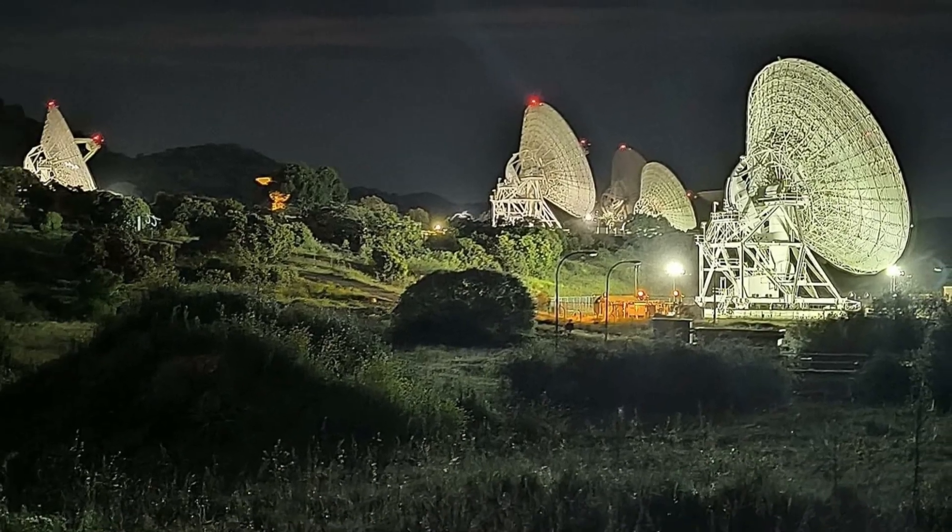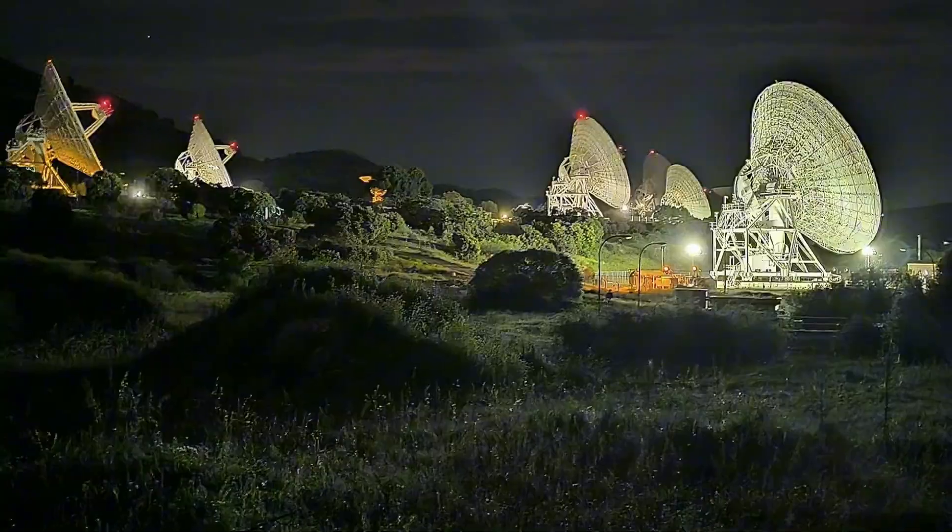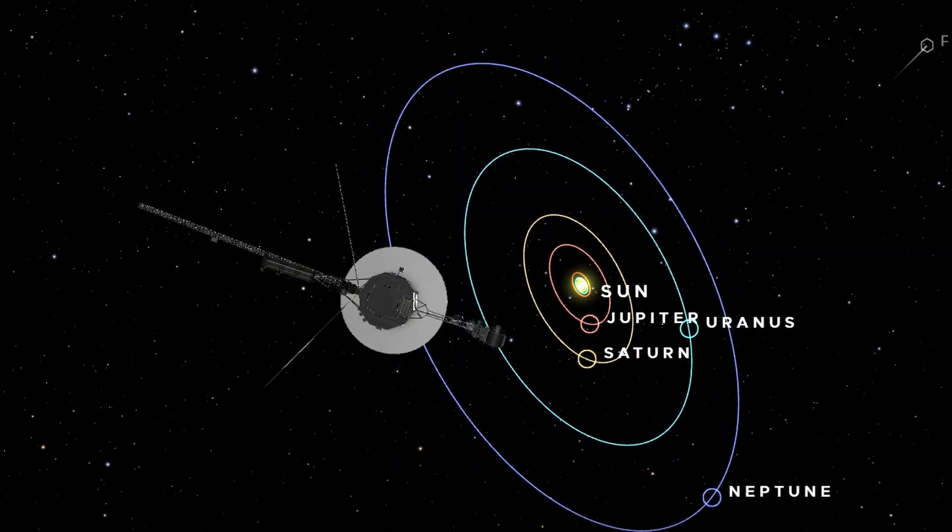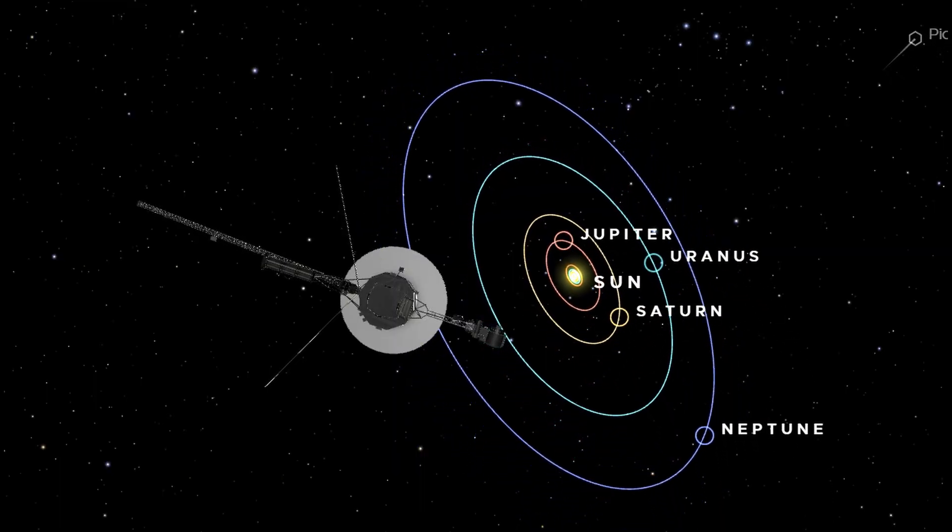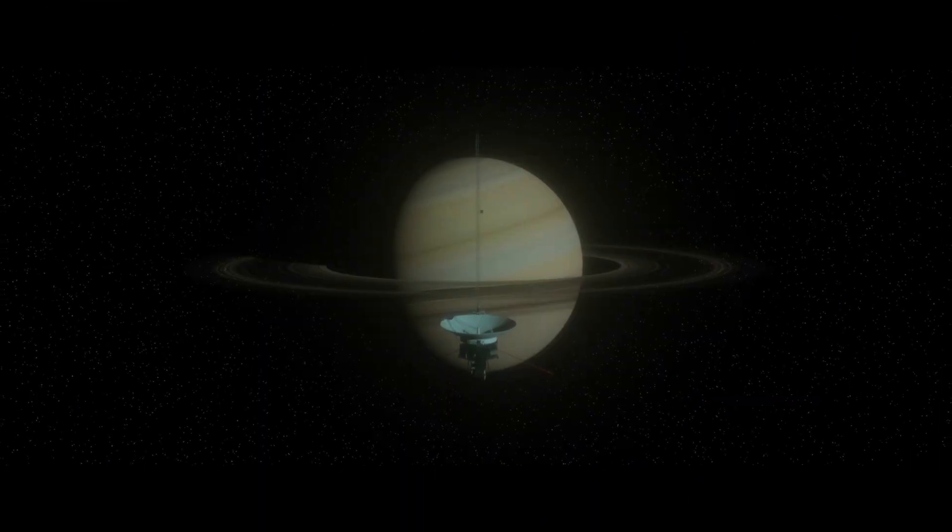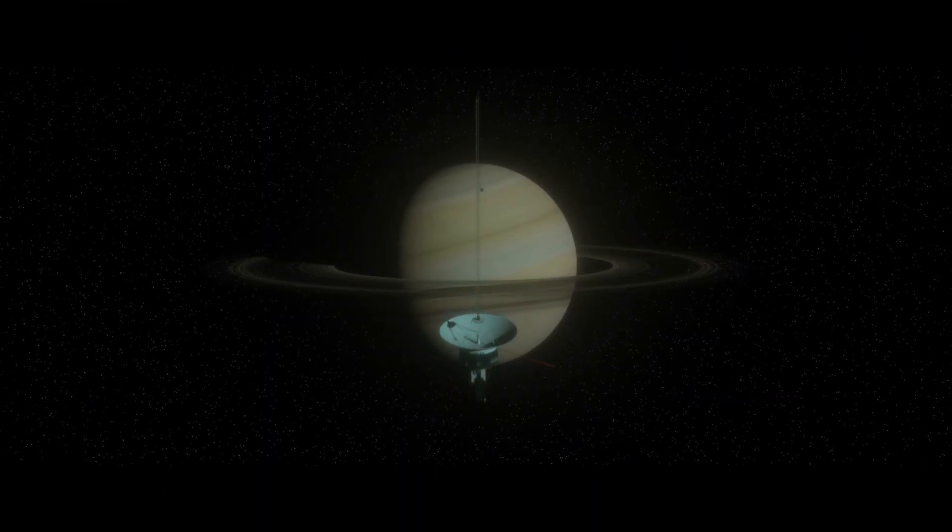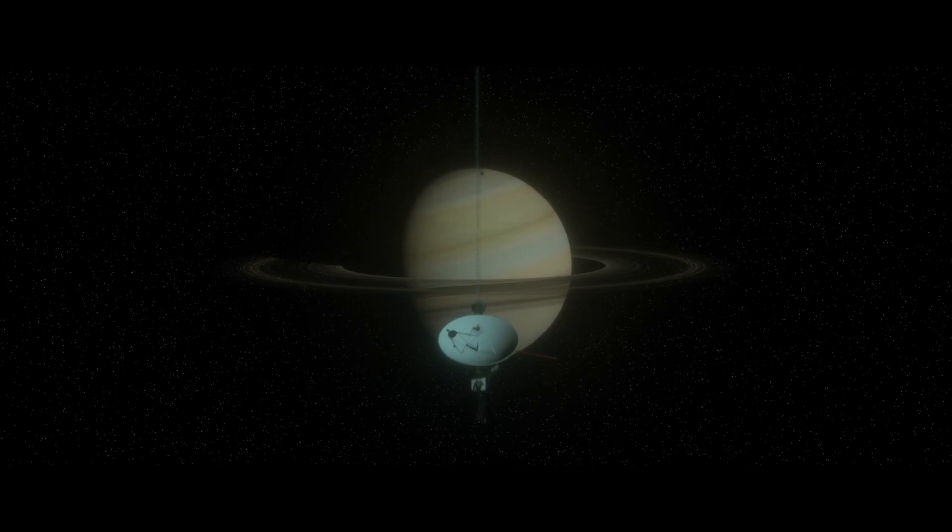NASA's Deep Space Network, composed of massive antennas, continues to listen for Voyager's signal, which is as faint as a whisper. This signal is the greatest testament to humanity's perseverance and patience.